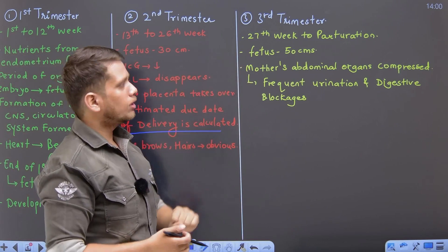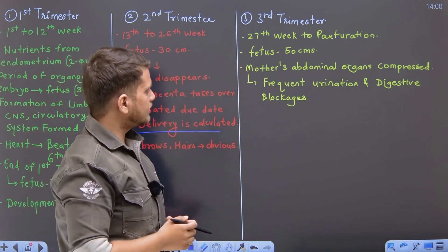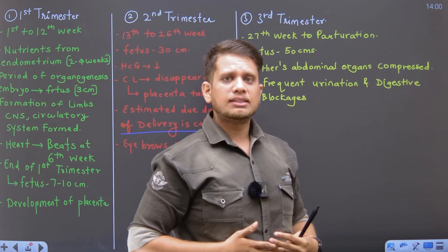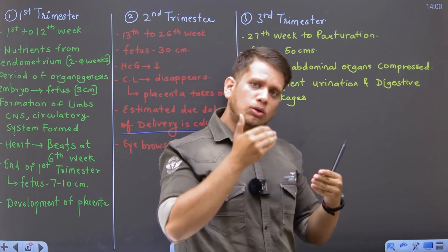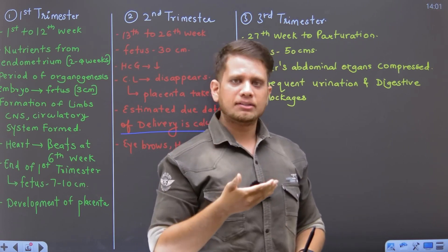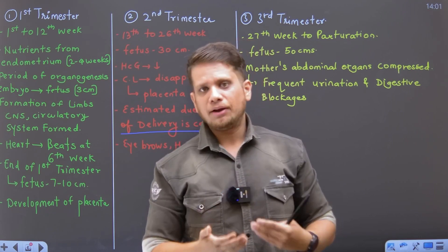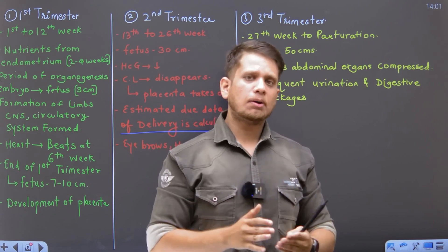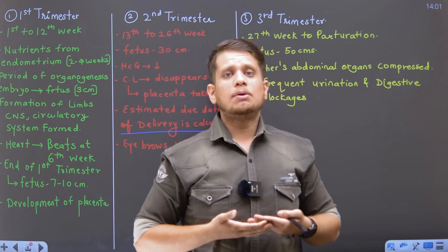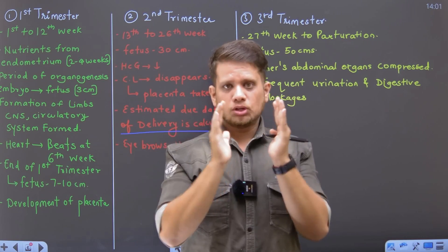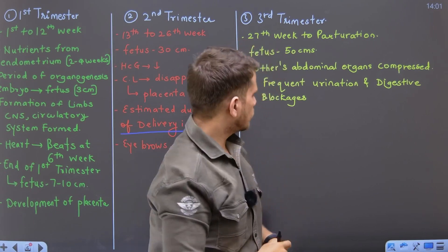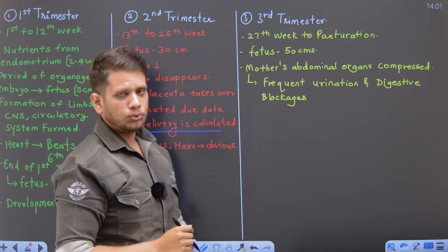Third trimester is from the 27th week to the time period of parturition. Fetus ka size is 50 centimeters. Mother ke organs — because size of the baby is starting to increase — baby ka size badhte ja raha hai, fetus ka size develop hone ki wajah se, mother ke bohat saare organs compress ho jaate hain. Mainly 2: sabse pehla stomach on the upper anterior side, and lower urinary bladder. Because urinary bladder compress ho raha hai, uske upar pressure padh raha hai, so mammy ko frequent urination ho sakti hai. And because stomach pe upper side pe pressure padh raha hai, size of the stomach is reduced, and mother might feel hungrier more than usual.